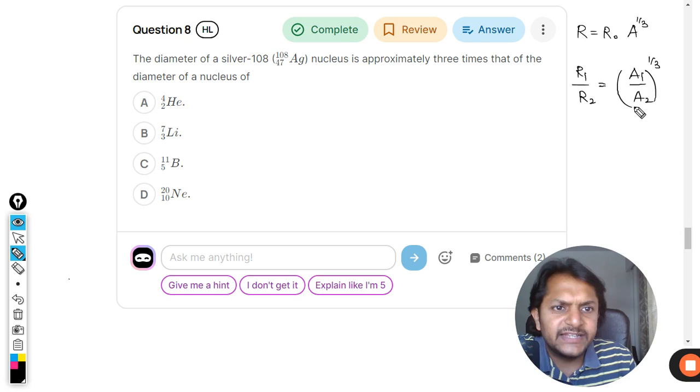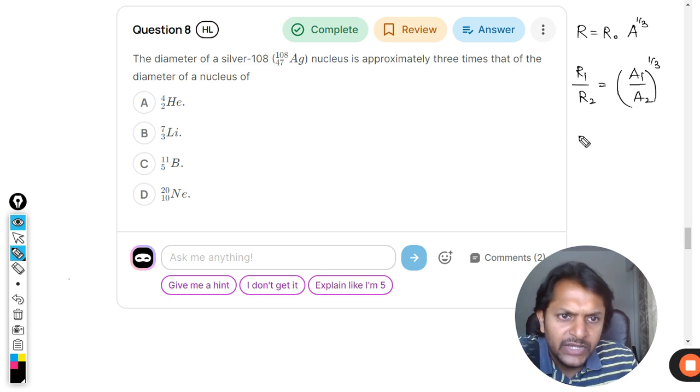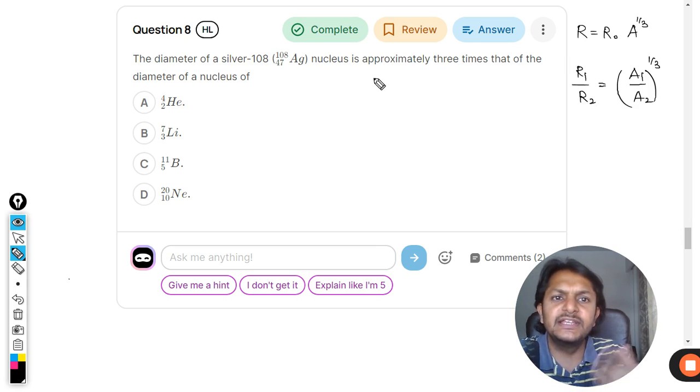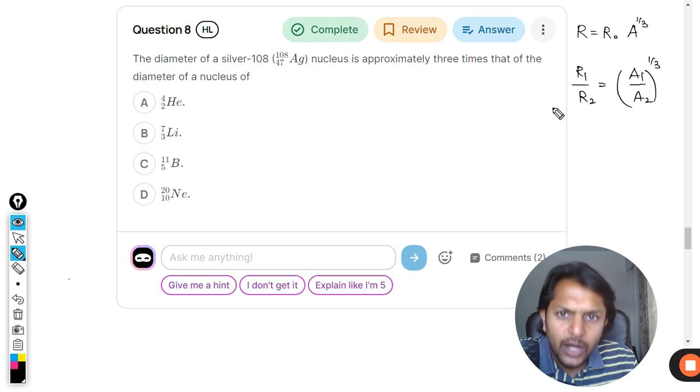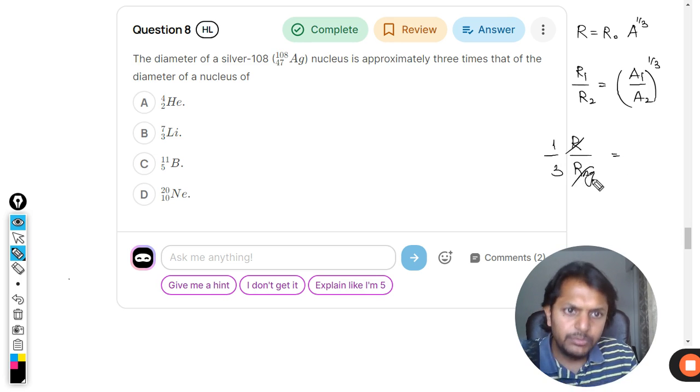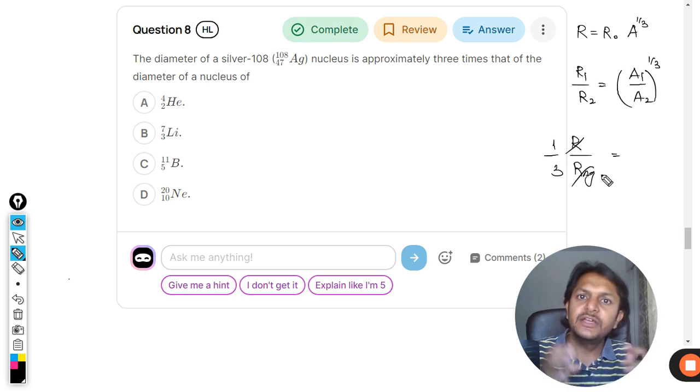So let us say 2 belongs to silver. The diameter of this is approximately three times that of this. So it means that the radius of the new nucleus divided by the radius of silver will be 1 by 3, because the radius of silver is bigger, it is three times.